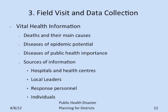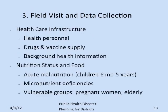Assess the health care infrastructure, including health personnel, drugs and vaccine supply, and background health information. Assess the status of nutrition and food including acute malnutrition, especially among children 6 months to 5 years, micronutrient deficiencies, and vulnerable groups especially pregnant women, the elderly, the disabled and children.